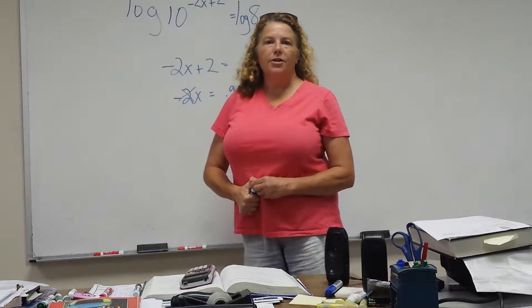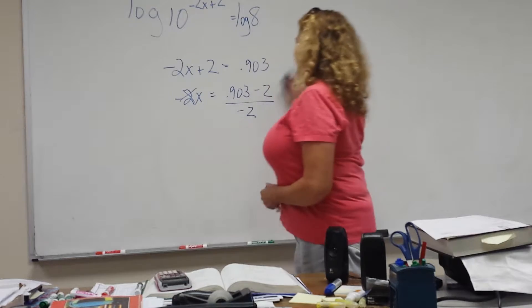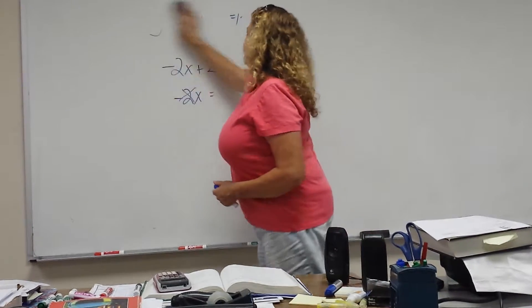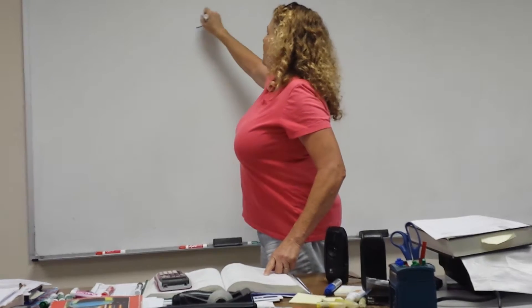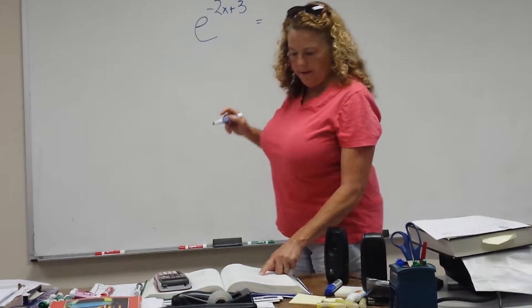And you can do all that on your calculator. Now, what happens if instead of 10, you have e. You have e to the negative 2x plus 3 equals 5.